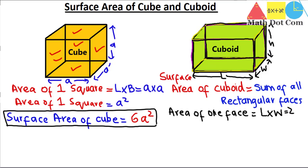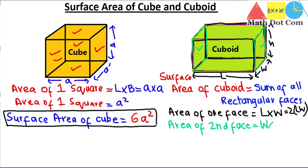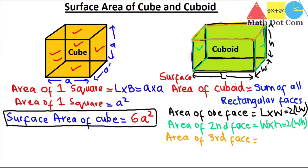Moving to the second pair of faces: the area of that face is width × height, and because two such faces are of the same measurement, the contribution is 2 × width × height. The third pair is the top and bottom faces; the area of that face is length × height, giving 2 × length × height.